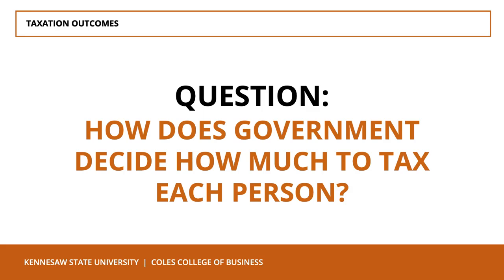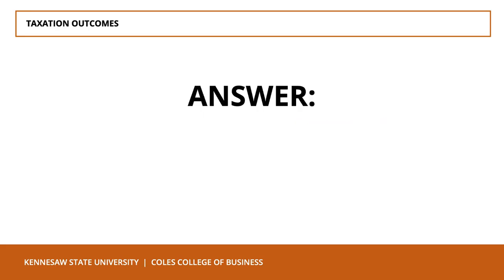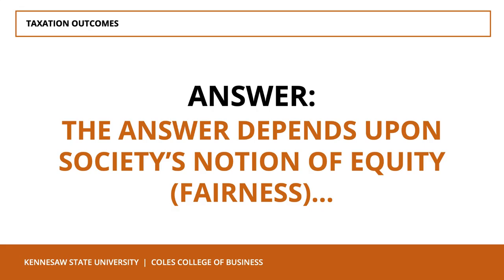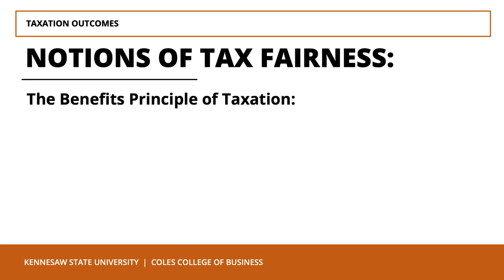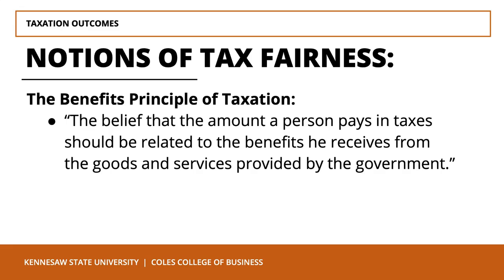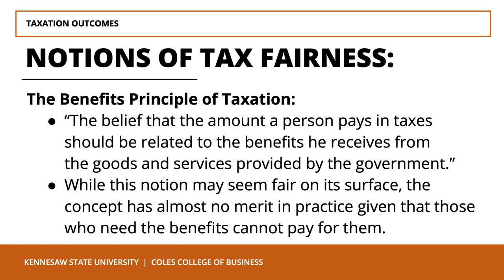How does the government decide how much to tax each person? This greatly depends upon society's notion of equity or fairness. The first principle is called the benefits principle of taxation: the belief that the amount a person pays in taxes should be related to the benefits that person receives from the government — the more you receive, the more you should pay. While this may seem fair on the surface, the idea has almost no merit in practice, because the individuals who receive the most from government do so precisely because they cannot afford these benefits. Examples include nutritional assistance, housing vouchers, unemployment compensation, and Medicaid.